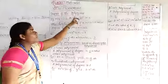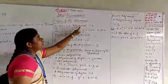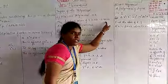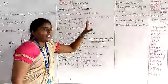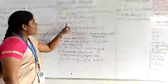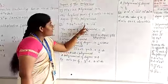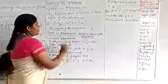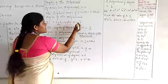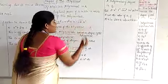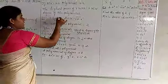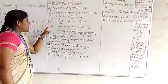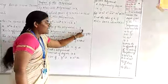Next, moving on to the degree of a polynomial. If p(x) is a polynomial in x, the highest power of x in p(x) is called the degree of the polynomial. Consider the example: 5x³ − 4x² + x − √2. The powers present are 3, 2, 1, and 0. The highest among these is 3, so the degree of the polynomial is 3.